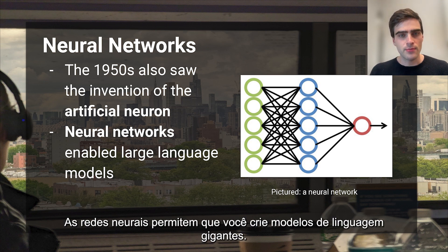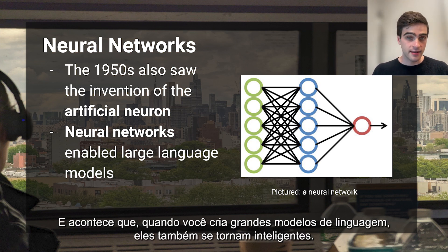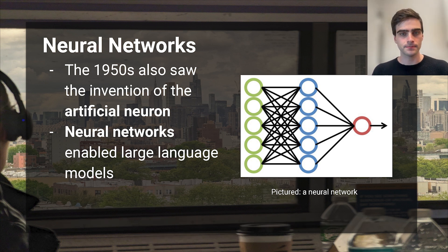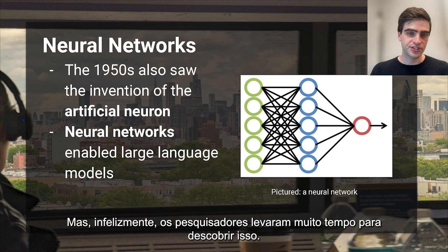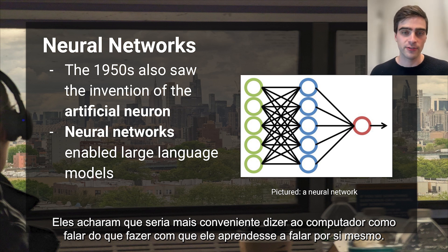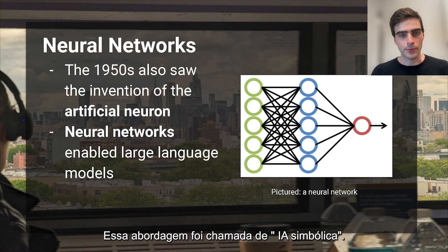Neural networks let you make giant language models. And, as it turns out, when you make big language models, they become intelligent too. But unfortunately, it took AI researchers a long time to discover this. They thought it'd be more convenient to tell the computer how to speak rather than have it learn to speak for itself. This approach was called symbolic AI.